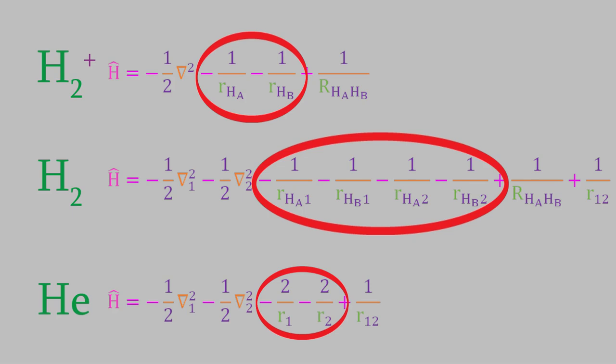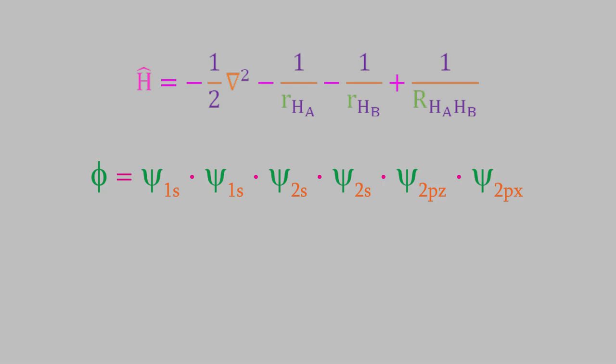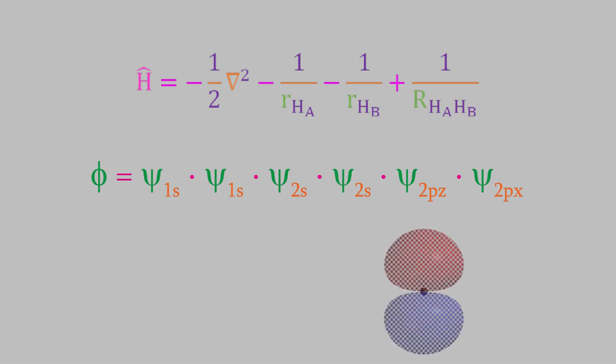But molecules like the ones we've been looking at present another difficulty. Let's look at the Hamiltonian for the H2 plus ion again. Suppose we want to use this Hamiltonian in the Hartree-Fock method. You might remember that the first step is to construct a trial wave function. What should the trial wave function be for this system? You might recall that in a previous video, we just made a product of hydrogen wave functions — Slater-type orbitals or sums of Gaussians. Each of those possible trial wave functions looks somewhat like an orbital of a hydrogen atom.